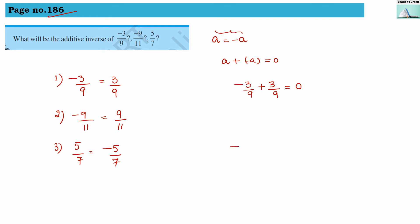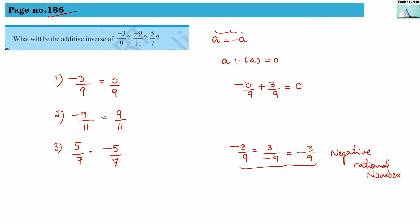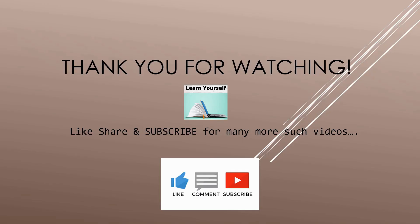Here we need to understand that minus 3 by 9, 3 by minus 9, and minus 3 by 9 — when the minus sign is written in different positions among the two integers — all these forms of rational numbers are considered as negative rational numbers, and all three are equal.